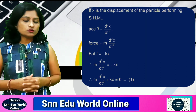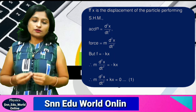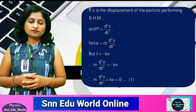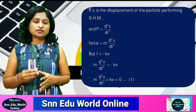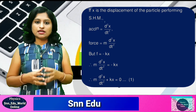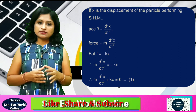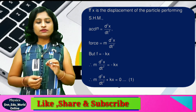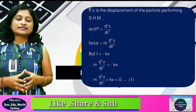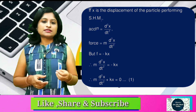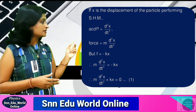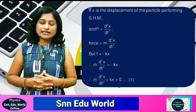Now we will use the concept of velocity and acceleration. As x is the displacement, velocity is dx/dt. And from this, acceleration is dv/dt, which means d²x/dt². So acceleration is nothing but the second derivative of the displacement.